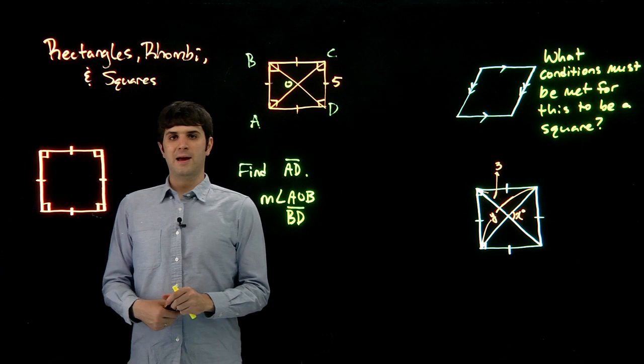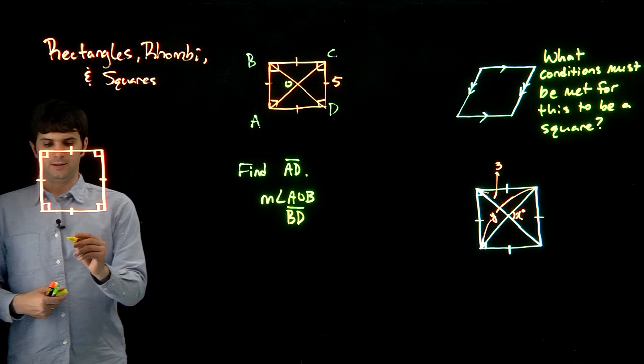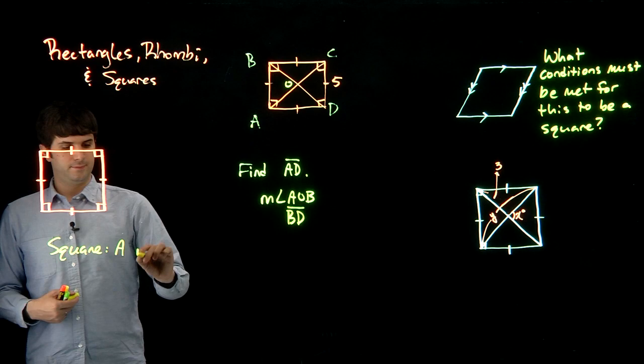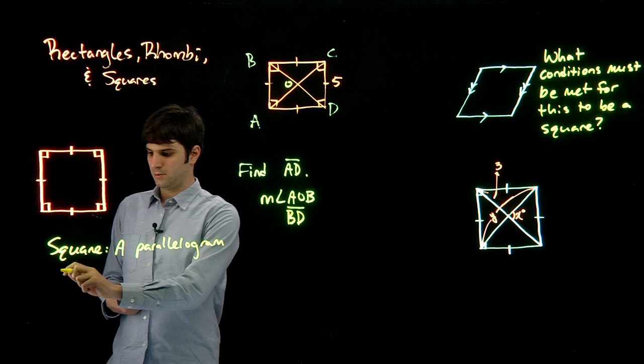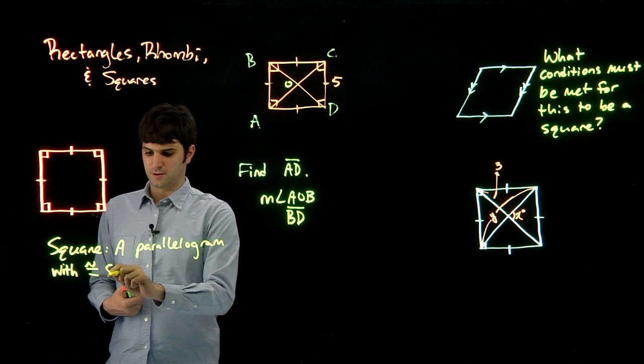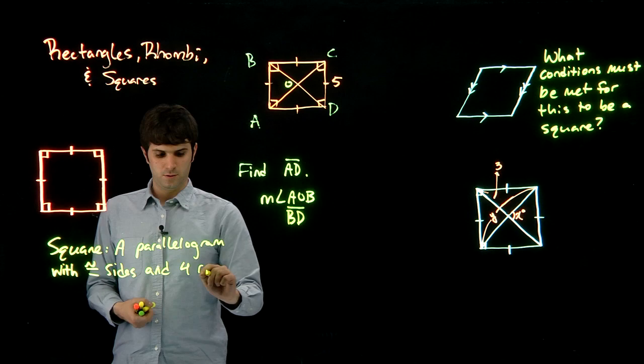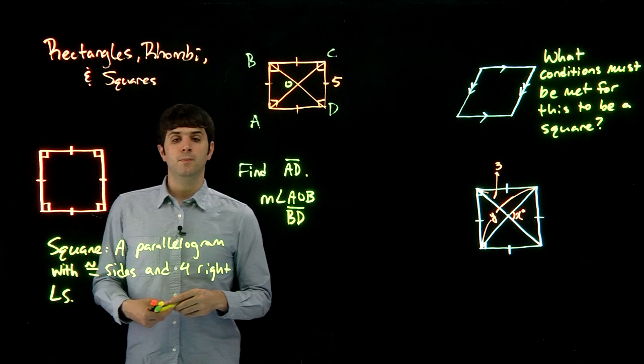The mathematical definition of a square is when we have a parallelogram with congruent sides and four right angles.